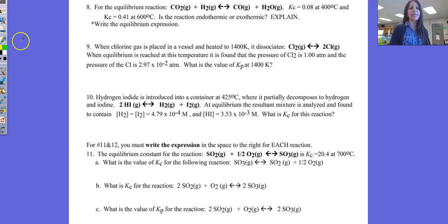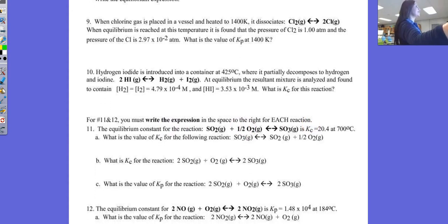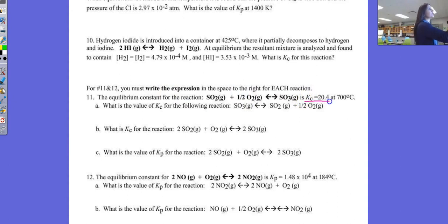So the next thing I wanted to look at here is number 11 or number 12, we could look at either one of these. So what it asks is the equilibrium constant is given for the reaction. And for example, in this problem, they're telling us that Kc is equal to 20.4 at 700 degrees Celsius.